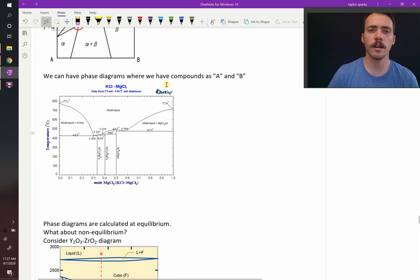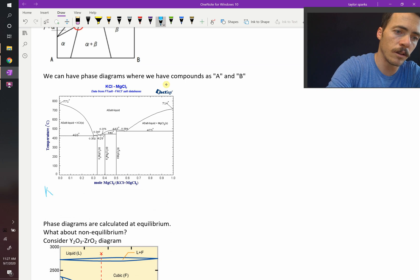Another thing to note about these phase diagrams is that they don't always have to be between pure compounds, like pure tin going to pure gold or something like that. You can have compounds on either end. For example, you can have, in this case, you've got KCl on this side and you've got MgCl2 on this side.